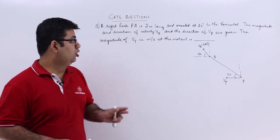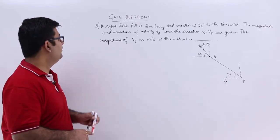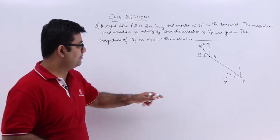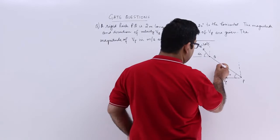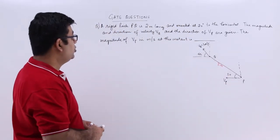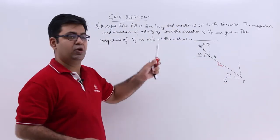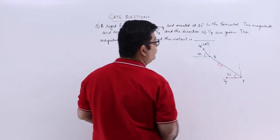Now let's start solving questions on TOM from gate. The first question says we have a rigid link PQ which is 2 meters long and is oriented at 20 degrees to the horizontal.